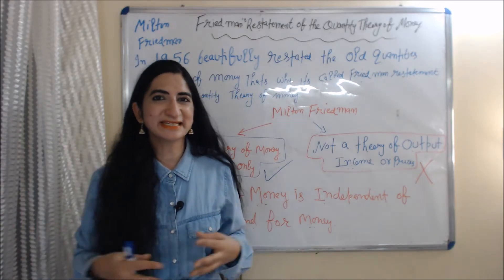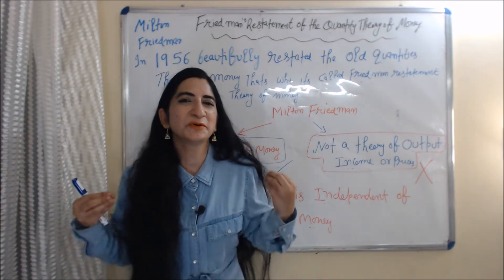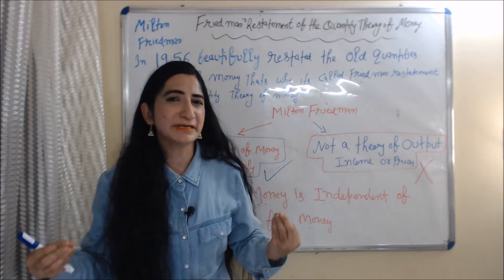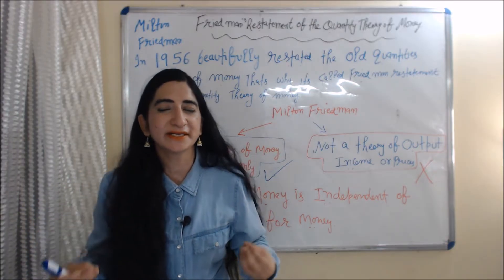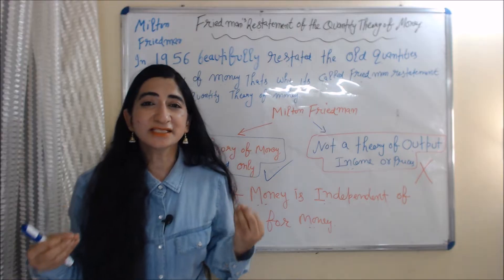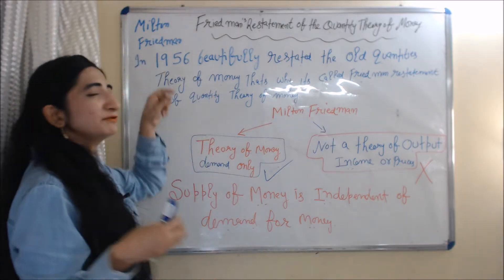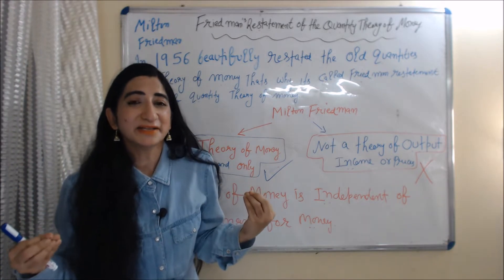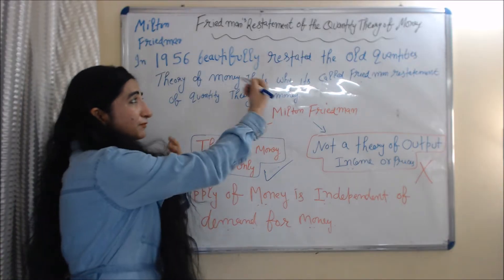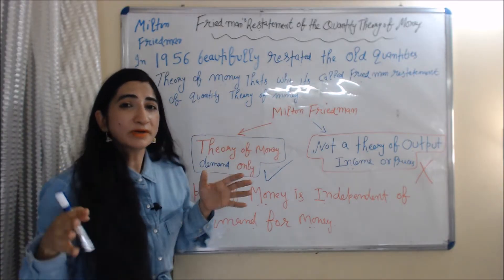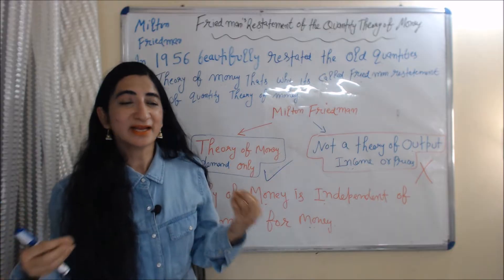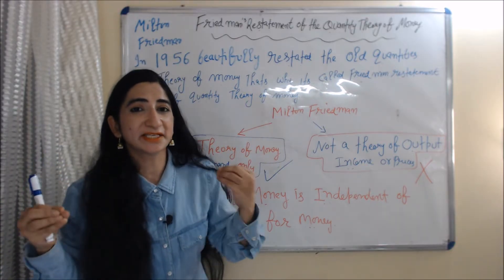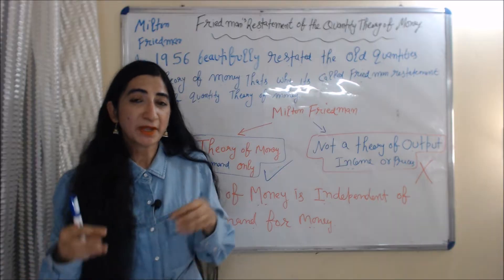Hello everyone, my name is Mini Seti. I hope you all are staying healthy. Today we are going to talk about Friedman's Restatement of Quantity Theory of Money. This theory is given by Milton Friedman, who in 1956 beautifully restated the old quantity theory of money — that's why it's called Friedman's Restatement of Quantity Theory of Money.